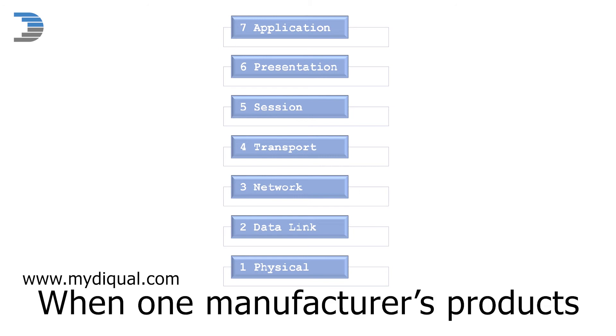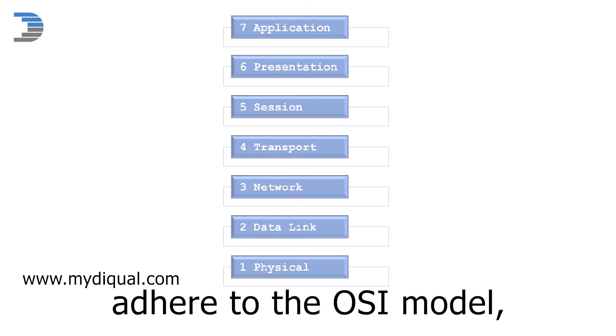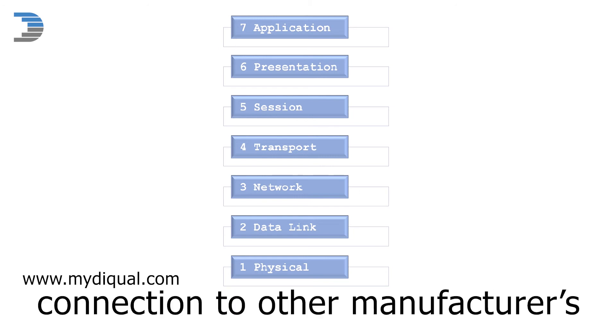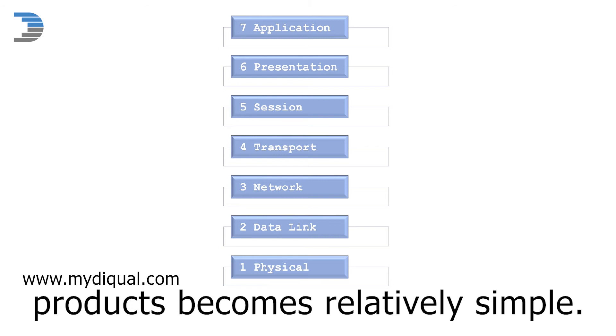When one manufacturer's products adhere to the OSI model, connection to other manufacturers' products becomes relatively simple.